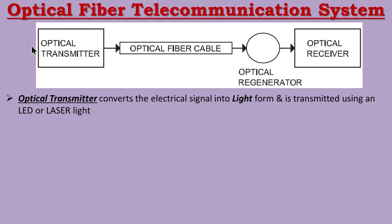The optical transmitter converts the electrical signal to a light signal. In digital terms, this means the 0s and 1s of digital data are represented as light pulses — light on or off. It converts the digital information into light pulses, which are then transmitted through the optical fiber cable.